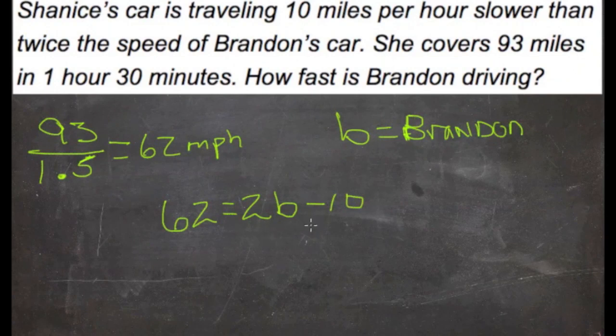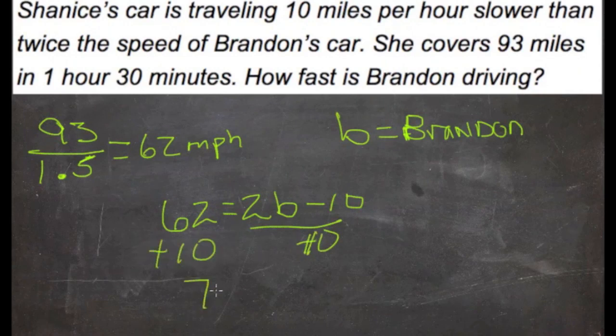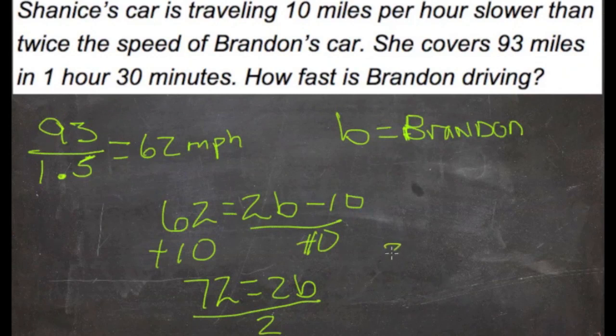Okay, so then we add 10 to both sides first. So we add 10 over here, add 10 over here. We'll get 72 equals 2B. Divide both sides by 2, gives us 36 is equal to B.